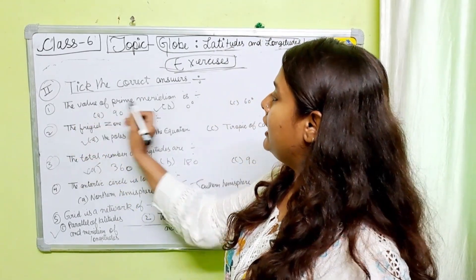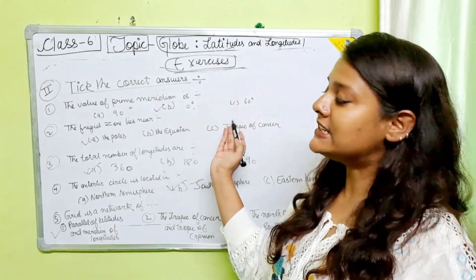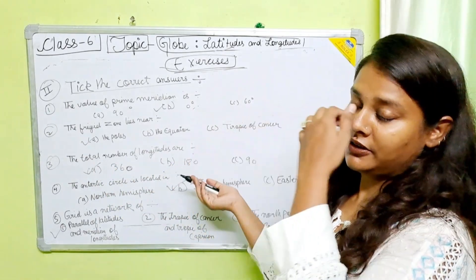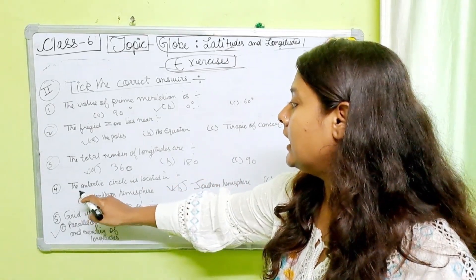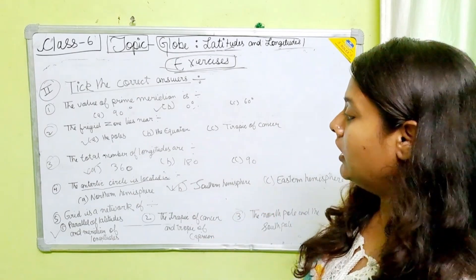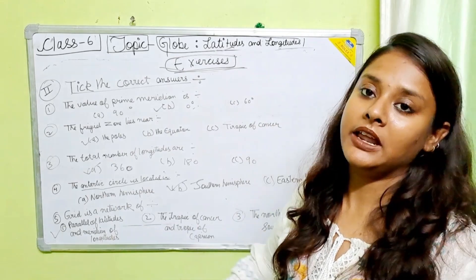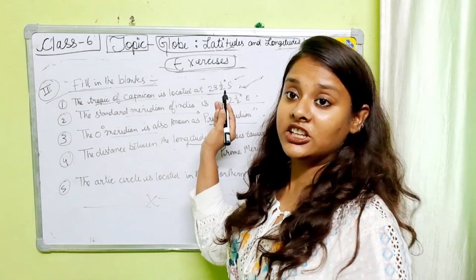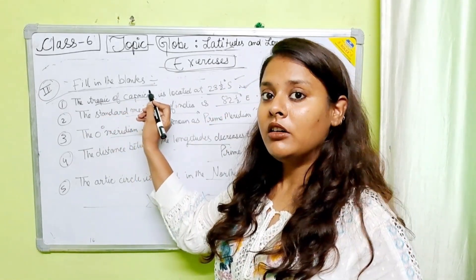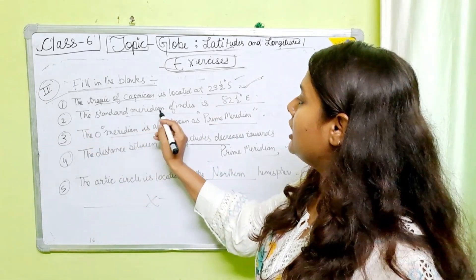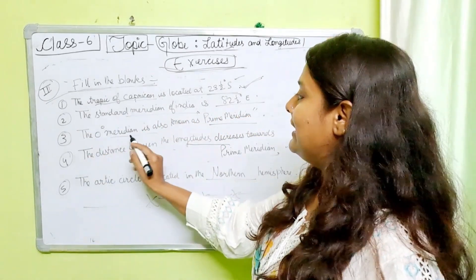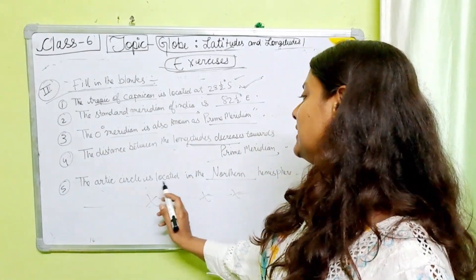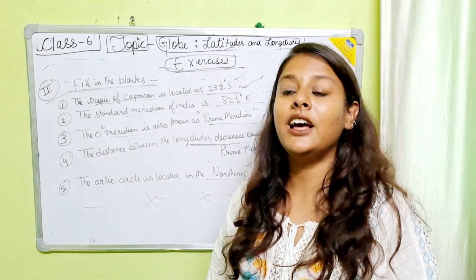Fill in the blanks: The value of the prime meridian is 0 degrees. The Frigid Zone lies near the poles. The total number of longitudes is 360 and latitudes is 181. The Antarctic Circle is located in the Southern Hemisphere. Grid is a network of parallels of latitudes and meridians of longitudes. The Tropic of Capricorn is located at 23 and a half degrees south and the Tropic of Cancer at 23 and a half degrees north. The standard meridian of India is 82 and a half degrees east. The zero meridian is also known as the prime meridian. The Arctic Circle is located in the Northern Hemisphere and the Antarctic Circle in the Southern Hemisphere.